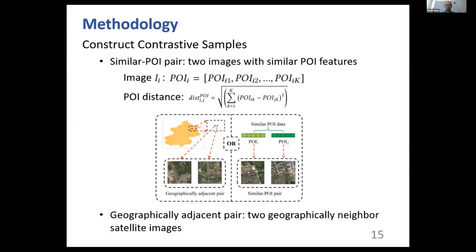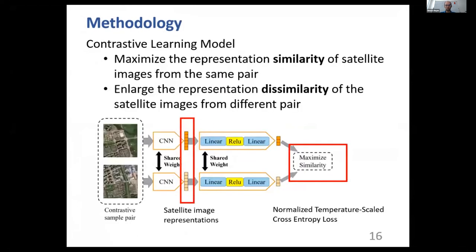We also select for each satellite image the geographically most adjacent image, which is the nearest neighbor satellite image in geographic space. Having done this, we have the similar POI satellite image pairs and the geographically adjacent satellite image pairs. Then we introduce the contrastive learning model. The contrastive learning model maximizes the representation similarity of satellite images from the same pair, and enlarges the representation dissimilarity of satellite images from different pairs.